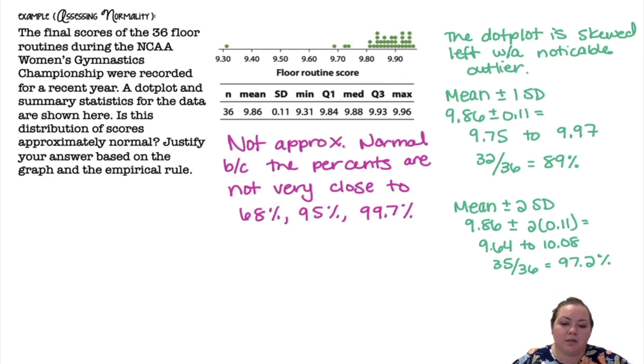All right. So we would say this is not approximately normal because the percents are not very close to the 68, 95, 99.7 that we would expect in a normal distribution.